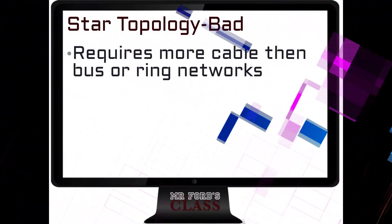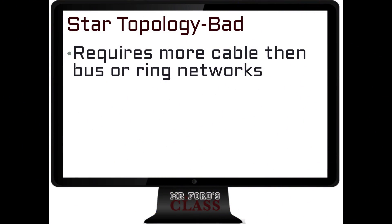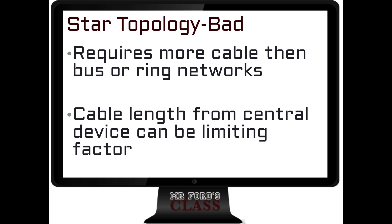It does require more cables than a BUS or a ring network. Remember, in a BUS there's a central backbone and everything's connected. In a STAR, everybody has to have their own connection to the central device. The cable length from the central device can also be a limiting factor. So in a bigger building — let's say a five-floor office — you have to be concerned about how you're running your cable and whether you can connect everything back to the central device, or whether you have to do something else. Cabling is a concern as far as length as well as how much cable.